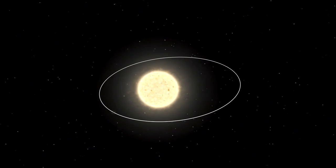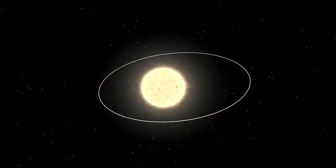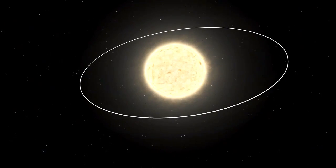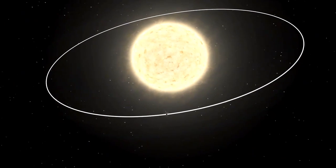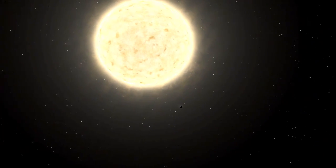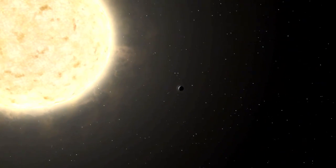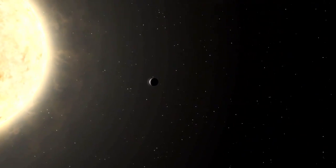HIP-13044 b is near to its host star. At the closest point in its elliptical orbit, it is less than one stellar diameter from the surface of the star, or only about 0.055 times the Sun-Earth distance, and it completes an orbit in only about 16 days.